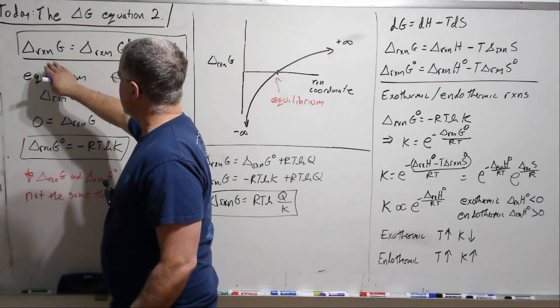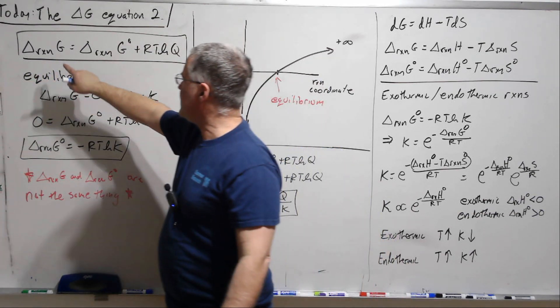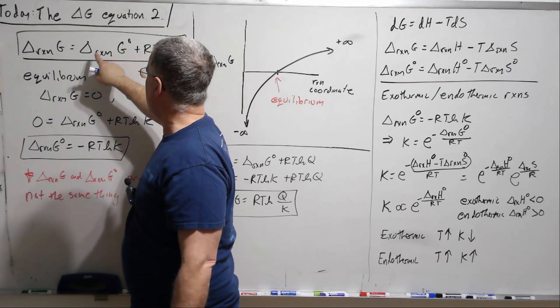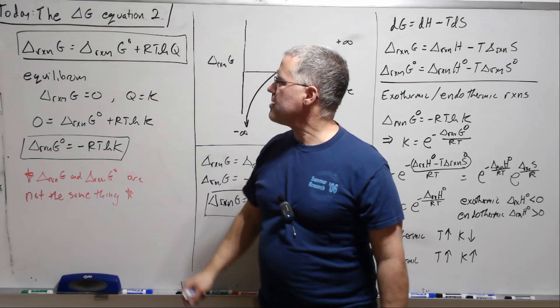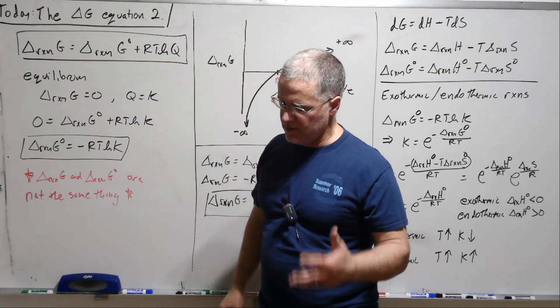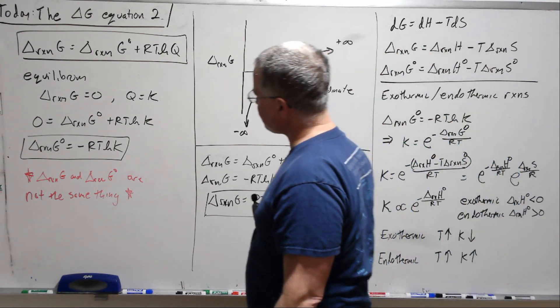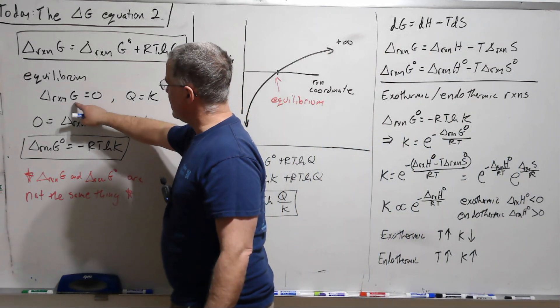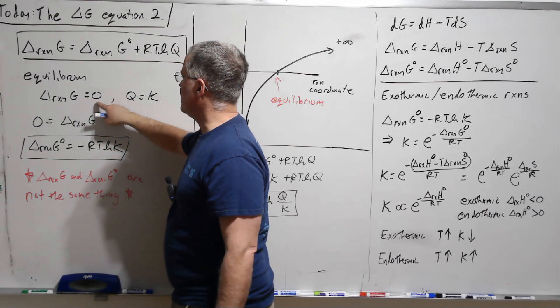So the Delta G equation is that at any point in the reaction Delta G can be gotten from Delta G standard minus RT ln Q, Q the reaction quotient. And at equilibrium, what equilibrium means is that Delta reaction G is zero, Q equals K.